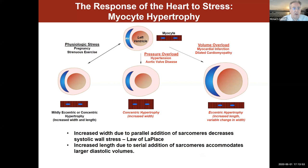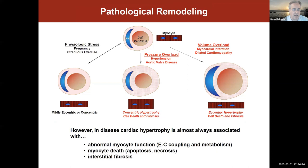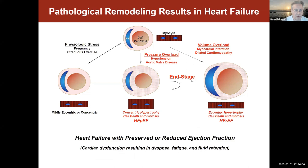In disease — with pressure overload or volume overload from high blood pressure, valve disease, myocardial infarction, or dilated cardiomyopathies — you get a tremendously asymmetric growth: concentric hypertrophy where width is dominant, or eccentric hypertrophy where length is dominant. While structurally compensatory, in disease the cardiac hypertrophy is almost invariably concomitant with abnormal myocyte function — excitation-contraction coupling, metabolism, myocyte death through apoptosis and necrosis, and myocardial interstitial fibrosis. Pathological hypertrophy, whether concentric or eccentric, tends to be irreversible and is a major risk factor for heart failure.